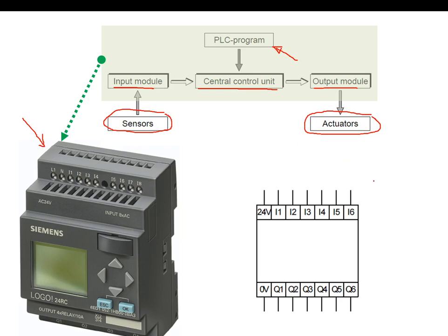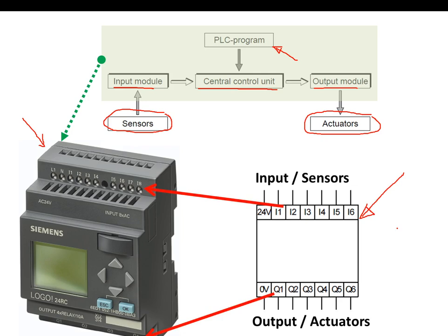Every PLC is represented symbolically by a diagram that refers to the actual input module and output module on the PLC unit. I stands for input and Q stands for output. Every PLC also comes with power supply connectors to energize the unit.